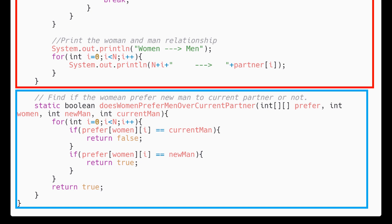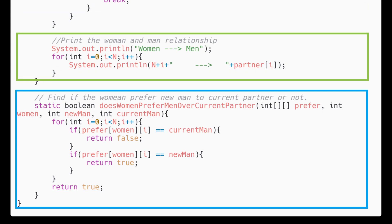In this method, we find which man is more suitable for women. If the new man have higher priority, we return true and if the current man have higher priority, we return false. At the end, we print all the relationship for all the women.